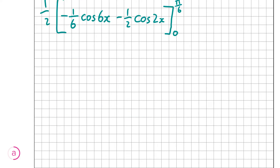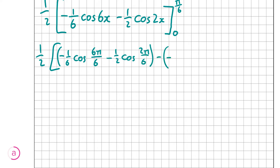Now I have to substitute pi over 6 for x and 0 for x and subtract the results, then halve the answer. So that gives me a half times: minus 1 over 6 cos(6 · π/6) minus a half times cos(2 · π/6), and then minus the bracket: minus 1 over 6 cos(6 · 0) minus a half times cos(2 · 0).